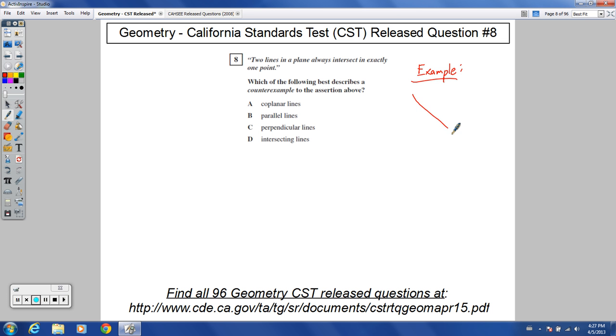And the reason why most people might initially think, oh yeah, that's always true. So there's two lines that intersect in exactly one point.